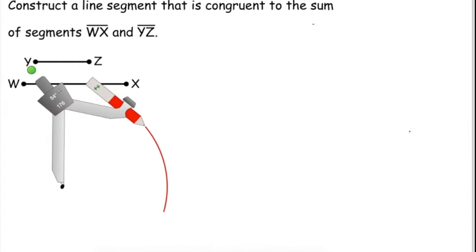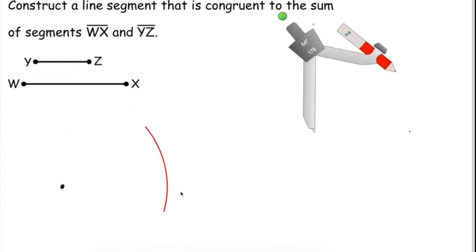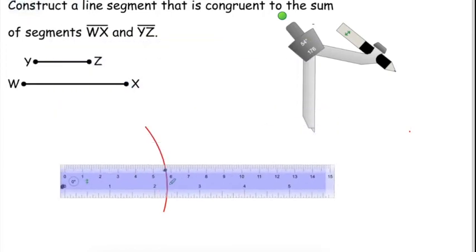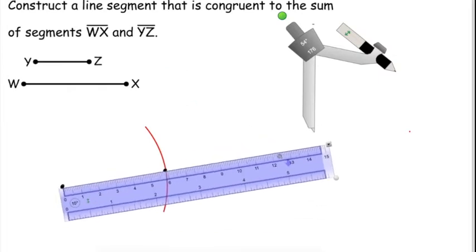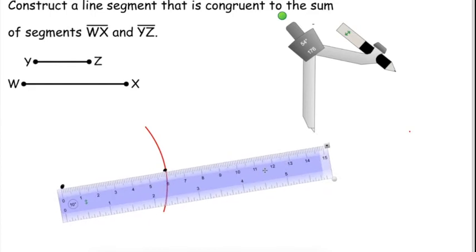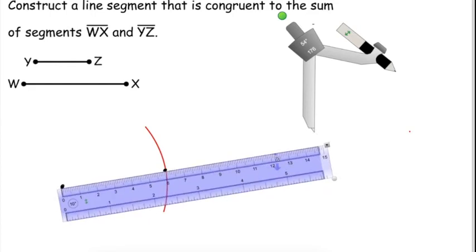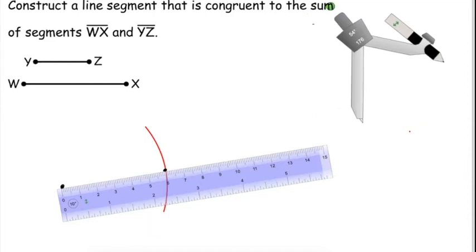We know that the distance from my starting point to the arc, any point on the arc, will be the distance from W to X. So we can take our pen and put a point on the arc, and then we get our straightedge again. This time we're going to draw way past the length that we need because we have to add another arc to it. We need all of the points to be collinear, meaning that all the points exist on the same line.